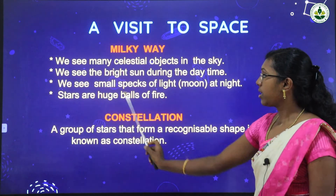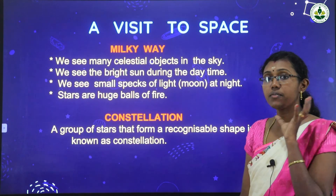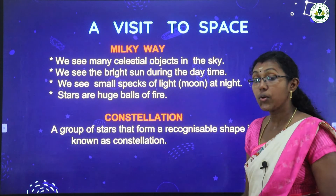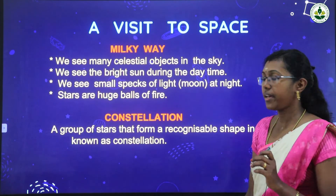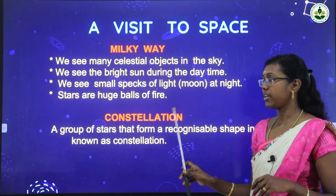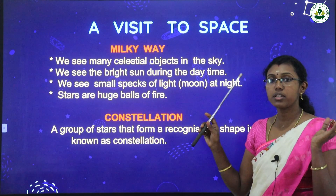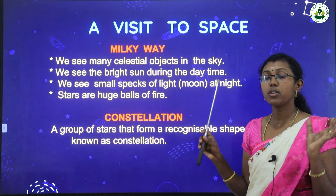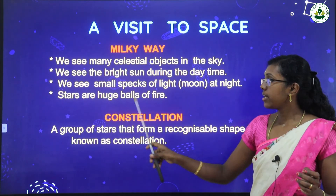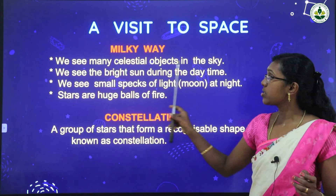Stars are huge balls of fire. Even though they look small in size, they are huge balls of fire — that's why we get light in the nighttime. So Milky Way means whatever is in the sky: the sun, the moon, and all the stars and celestial objects that are there.